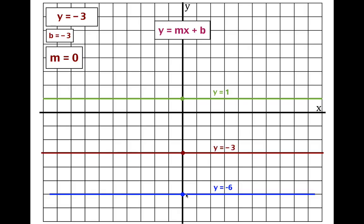That's graphing lines from the form y equals mx plus b when either the y-intercept is zero or the slope is zero. Thank you very much for watching — I hope you found that helpful. If you did, you can subscribe to my channel to get all of my chemistry, physics, and math videos, give this video a thumbs up, or leave a comment telling me whether it was helpful. Thank you very much for watching — we'll see you in the next video.